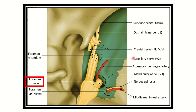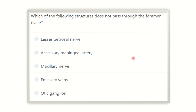Hello everyone, welcome to another question and answer session for the MRCS exam. This session will help you prepare for the MRCS exam. The question is: which of the following structures does NOT pass through the foramen ovale? First of all, we have to find out the foramen ovale, which lies at the skull base.